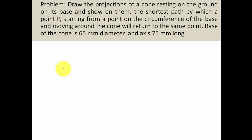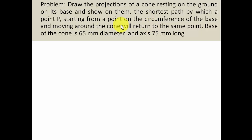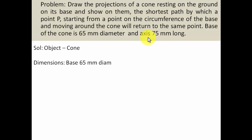Here's the problem description: draw the projections of a cone resting on the ground on its base, and show the shortest path by which a point P, starting from a point on the circumference of the base and moving around the cone, will return back to the same point. The base diameter is 65 mm and the axis (height) is 75 mm long.